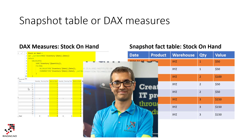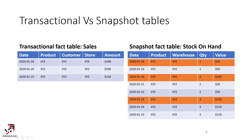I get this question a lot in my data modeling courses and under my data modeling articles and videos: should I create a snapshot fact table, or should I implement it using DAX measures in Power BI? Now some of you might not be familiar with the term 'snapshot fact table,' so let me explain what it is.